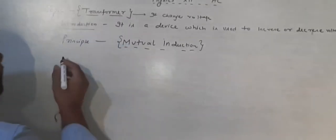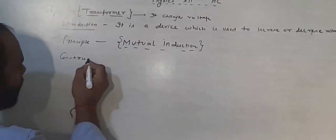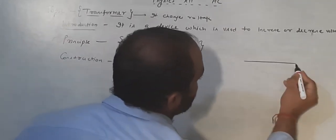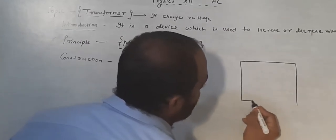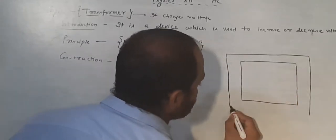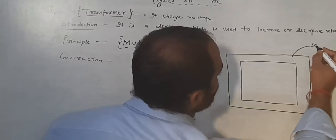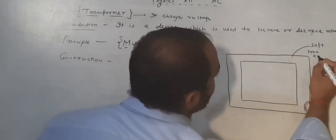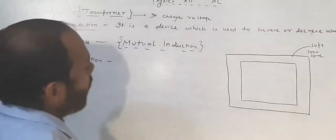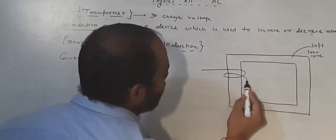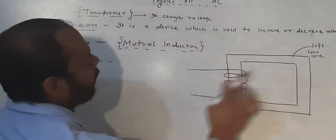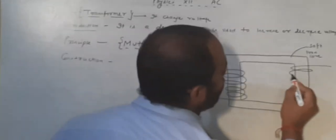Now, what is the construction? The construction involves a soft iron core — this is a soft iron frame. On one side of this frame we are making a coil, and on the other side there is also a coiling in the same way.